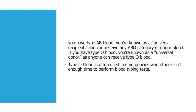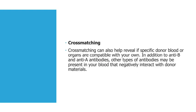If you have type AB blood, you are known as the universal recipient and can receive any ABO category of donor blood. If you have type O blood, you are known as the universal donor, as anyone can receive type O blood. Type O blood is often used in emergencies when there isn't enough time to perform blood typing.